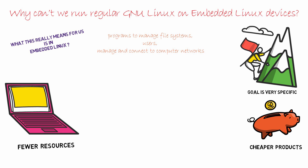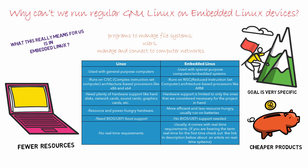Let's look at the difference between Linux and Embedded Linux in the form of a table. Linux is used with general purpose computers, whereas Embedded Linux is used with special purpose computers or embedded systems. Linux runs on CISC architecture-based processors like x86 and x64, whereas Embedded Linux runs on RISC architecture-based processors like ARM. Linux needs plenty of hardware support like hard disks, network cards, sound cards, and graphic cards, whereas Embedded Linux hardware support is limited to only what is necessary for the project. Linux is resource and power hungry, whereas Embedded Linux is more efficient and less resource hungry, and usually runs on batteries.